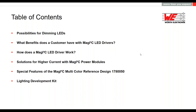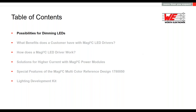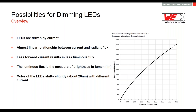Let's start with the different dimming possibilities for LEDs. To begin, we need to understand how dimming of LEDs works. LEDs are current controlled, so the voltage across the LEDs is automatically adjusted according to their non-linear diode characteristics. Most LEDs have a forward voltage of 1.8 to 3.2 volts, and there is an almost linear relationship between the radiated power and the current. Therefore, the luminous flux depends on the forward current. As you can see in the diagram, less current through the LEDs results in less luminous flux and therefore lower brightness, expressed in lumens.